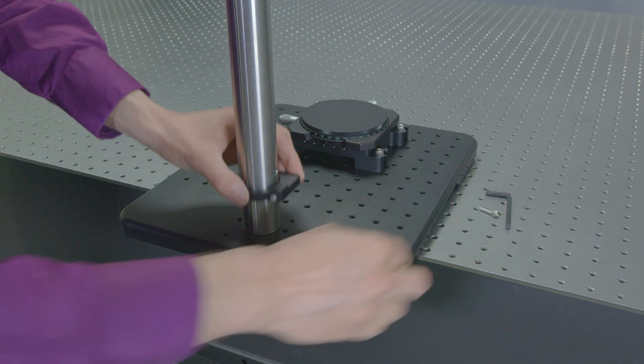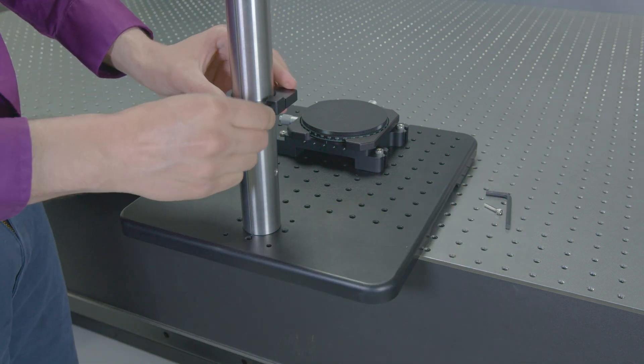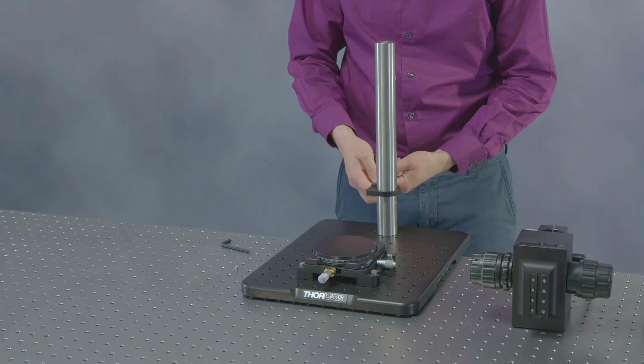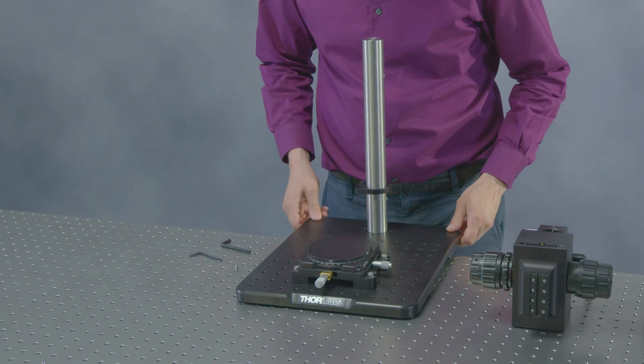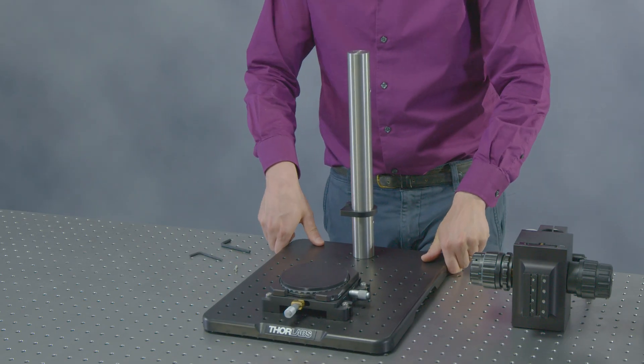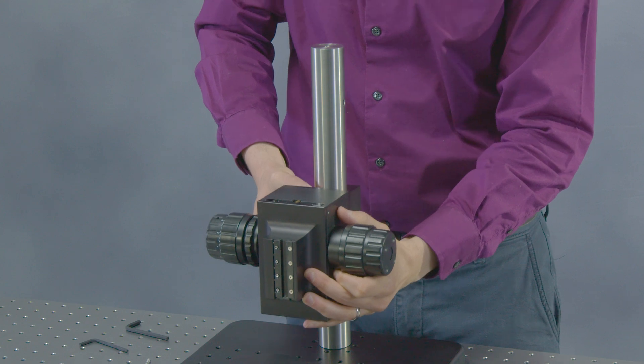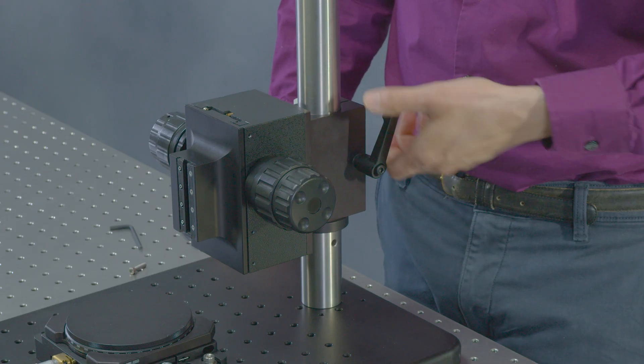Next, loosen the safety ring to slide it several inches above the base. Use the hex key to secure the ring in place. Place the focus block onto the post and use the lever to tighten it into place.